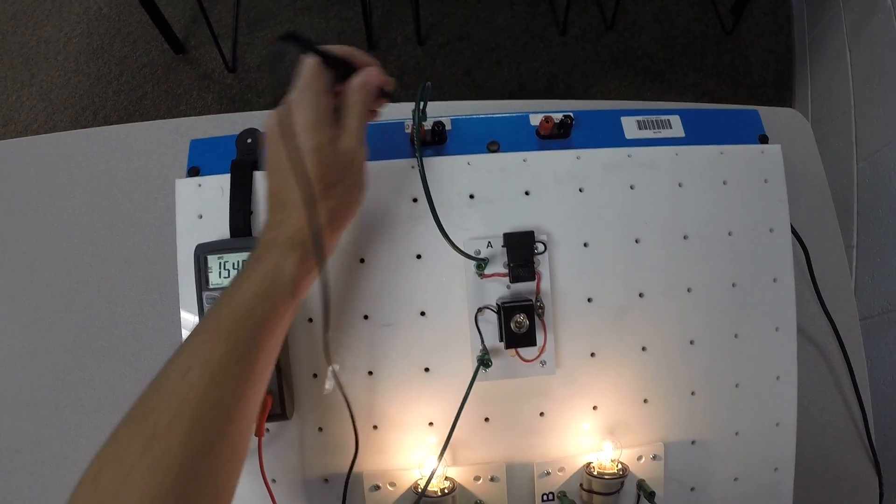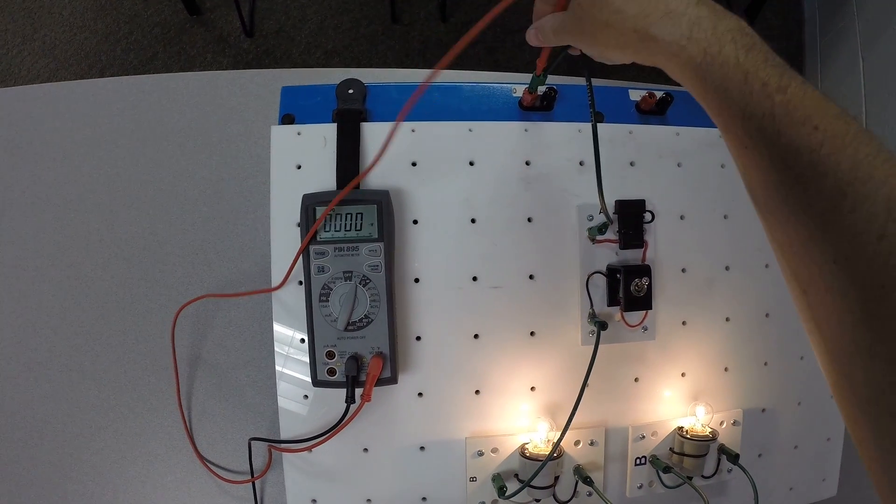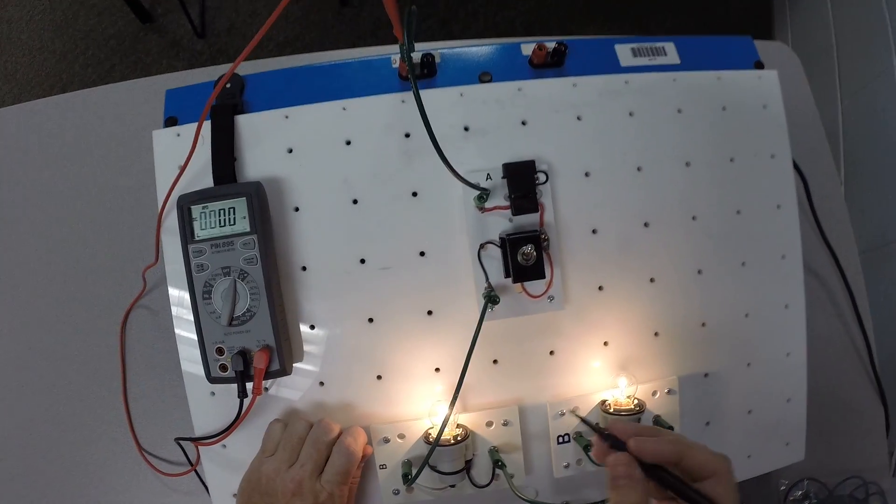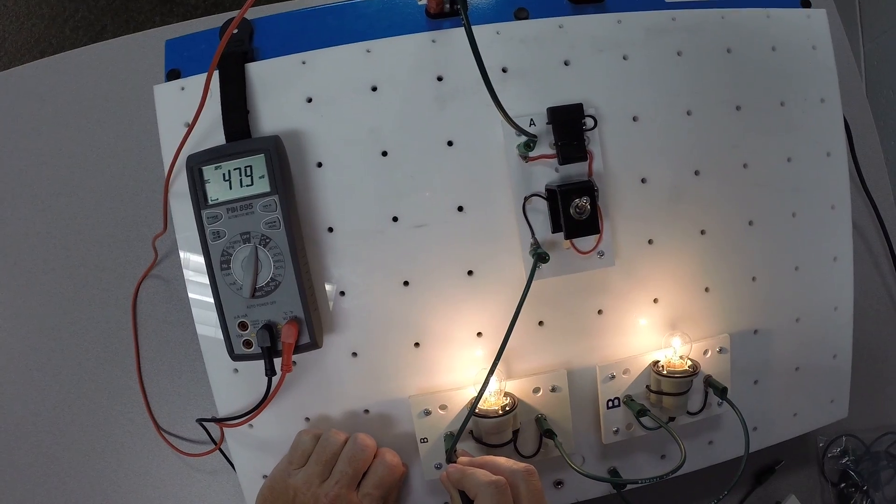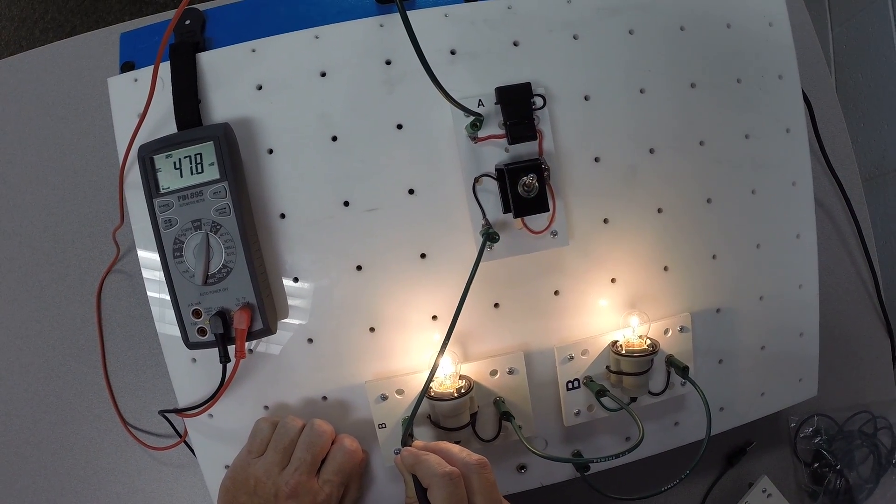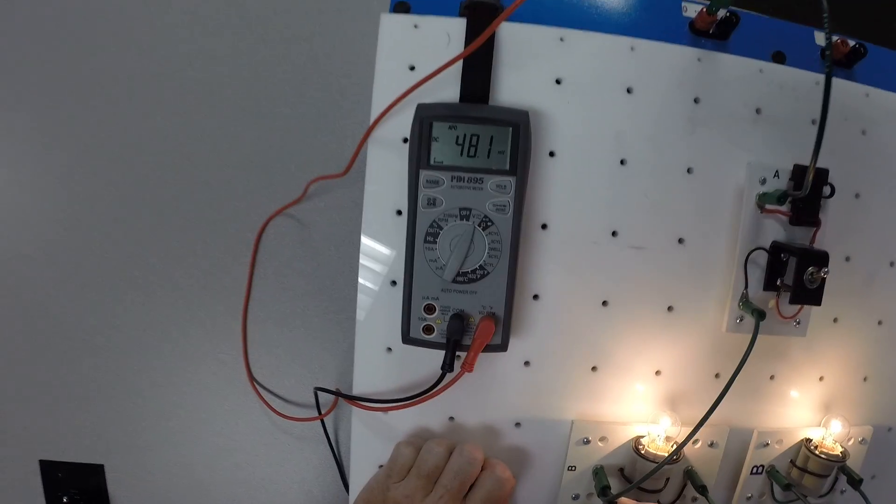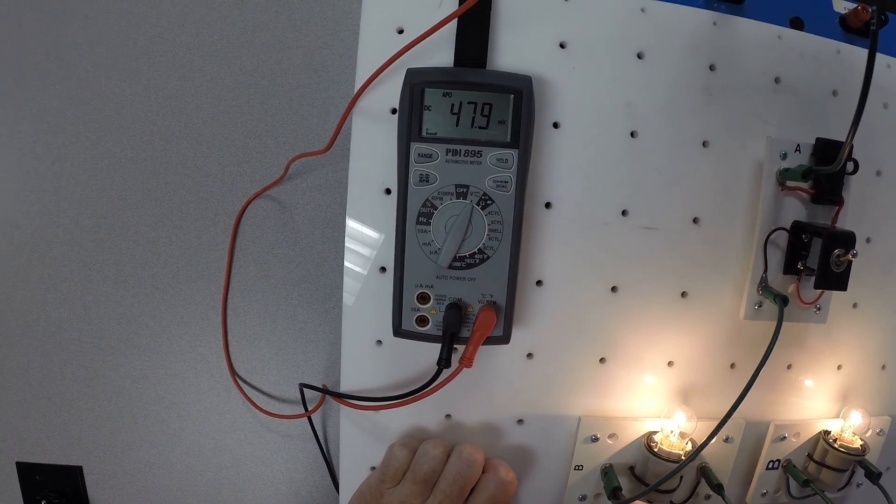We'll start out up here at our 12-volt tap. It doesn't matter too much which wire you put where. We're going to put our red lead right there, and then we are going to put our black lead down here. So right now, we are measuring the voltage drop on the positive side of this circuit. So that includes the fuse, the switch, and the wires. If you look at our reading, you can see we have 48 millivolts.